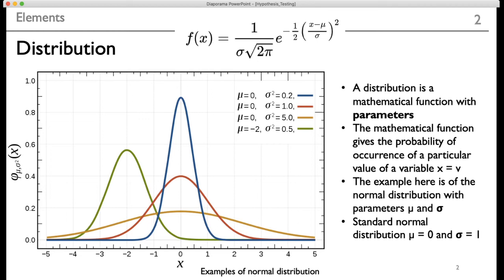If you see on this slide, this f(x) represents the Gaussian distribution. In the Gaussian distribution, there are two parameters: mu and sigma. Mu is indicative of the mean and sigma is indicative of the standard deviation. So if we say mu equal to 0 and sigma equal to 1, what we get is the standard normal distribution.